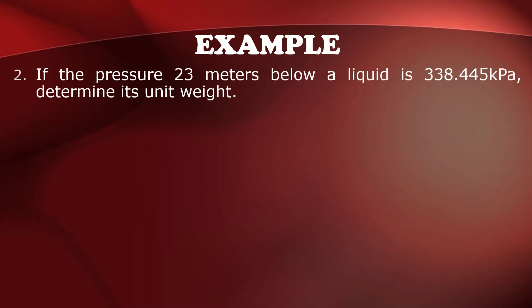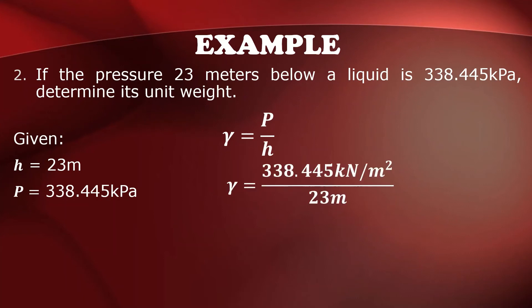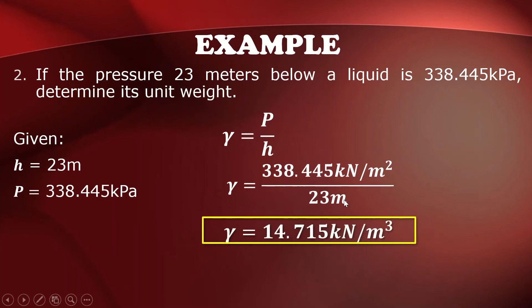Second example, if the pressure 23 meters below a liquid is 338.445 kilopascal, determine its unit weight. So given H is 23, P is 338.445 kilopascal. So we are going to use this formula in calculating for the specific weight. So pressure is 338 kilonewton per meter squared and H is 23 meters, dividing the two values that will be equal to 14.715 kilonewton per meter cube.